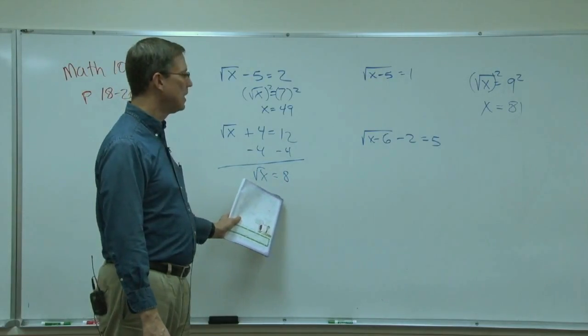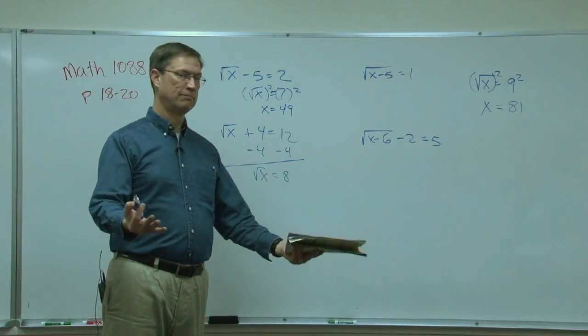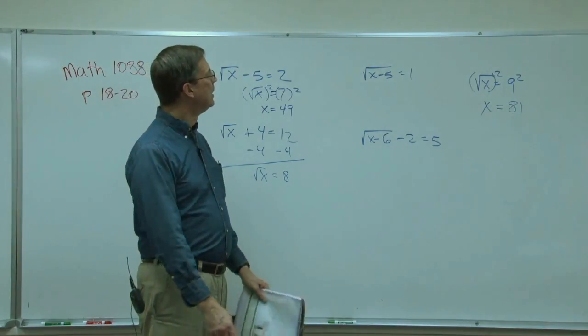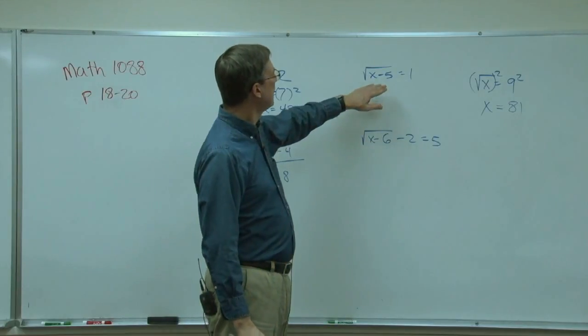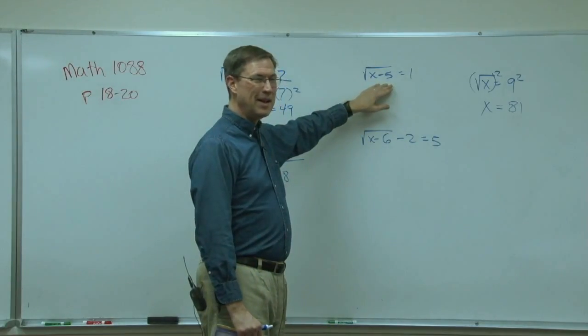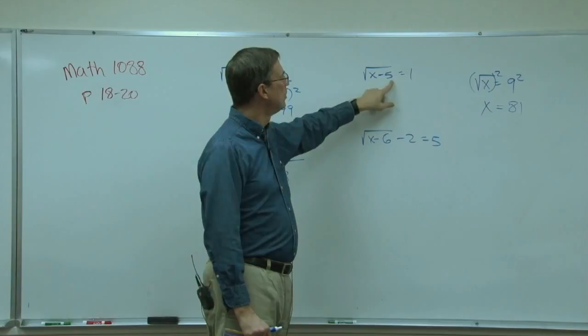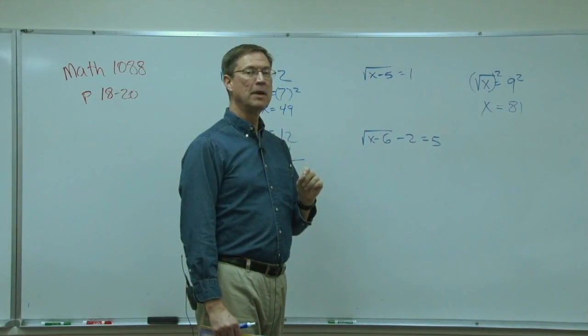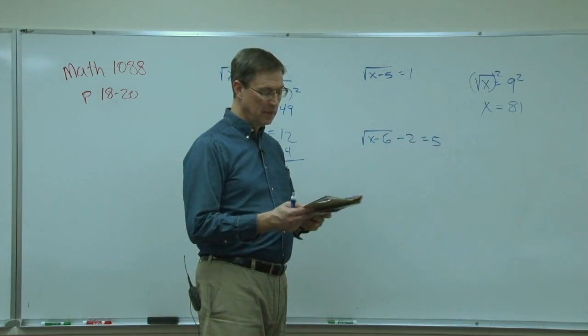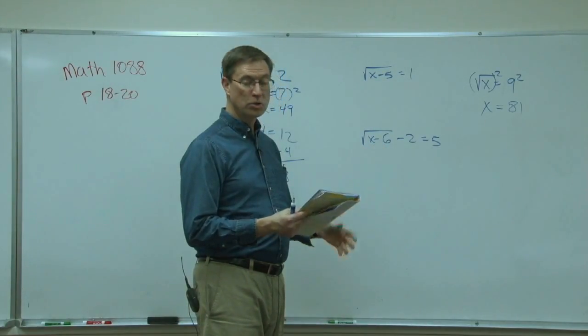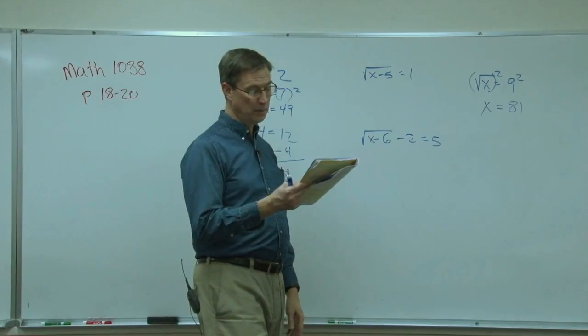Now on page 20 they pull a fast one on us and make the thing under the radical not just x but sometimes a quantity like x plus 5 or x minus 6 or one of these. It actually said 2x minus 1, and problem 12.